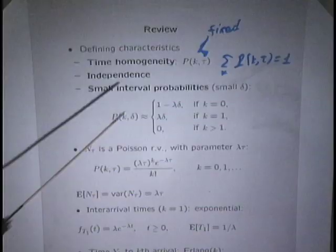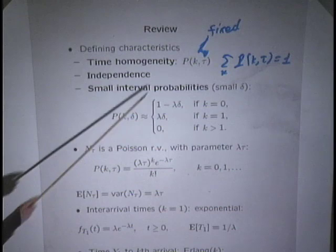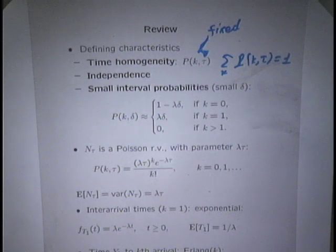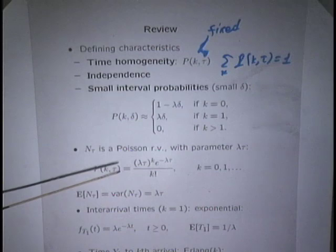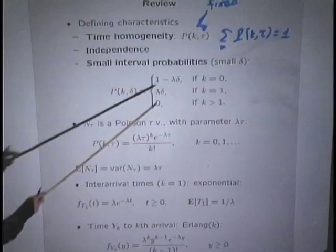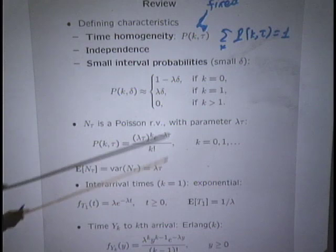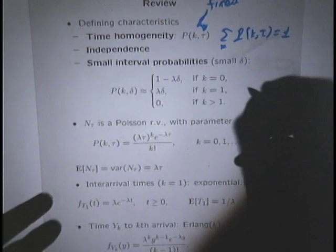To specify the distribution of the number of arrivals, we go in stages. We first specify the function for the case where the time interval is very small. For a small duration delta, the probability of obtaining one arrival is lambda times delta. The remaining probability is assigned to the event of no arrivals. The probability of obtaining more than one arrival in a tiny interval is essentially zero — modulo terms of order delta squared, which can be ignored when delta is very small.